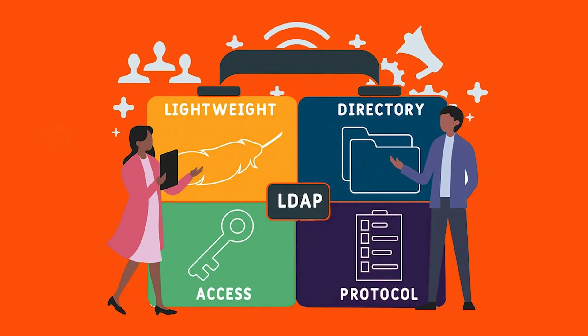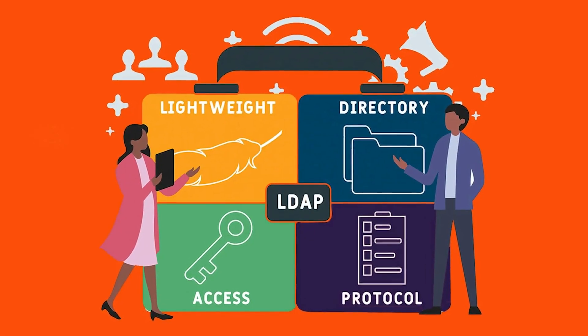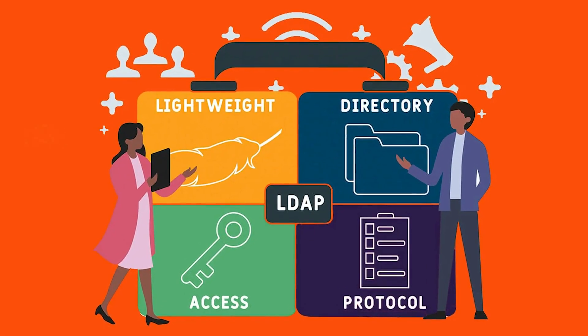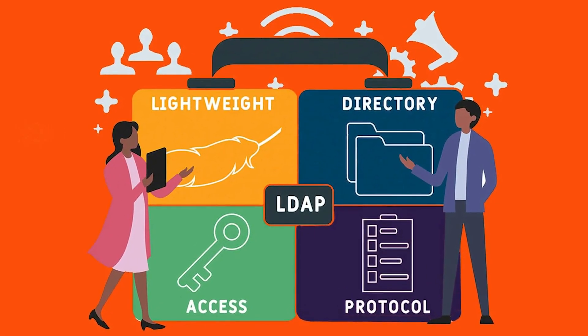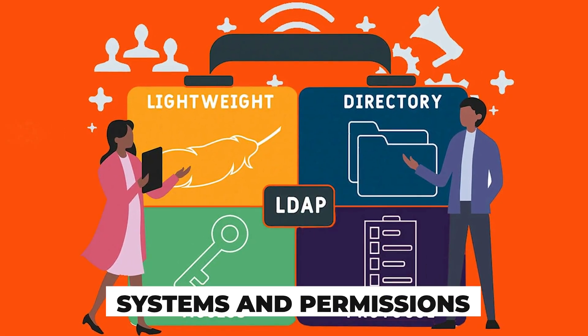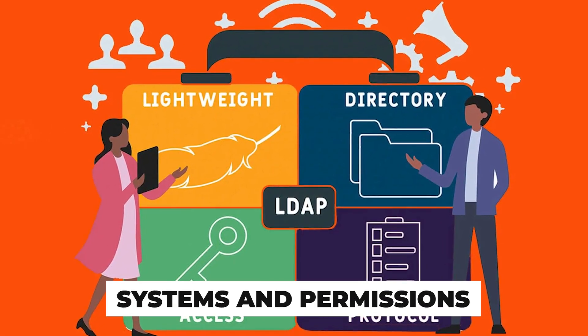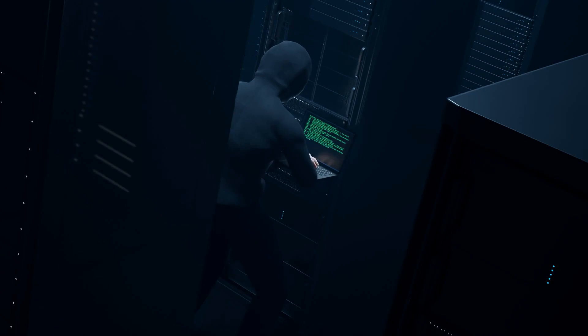Next we have LDAP, which is like your network's address book. It stores all the details about users, systems, and permissions. If someone unauthorized flips through this book, they can see exactly where your weak spots are.